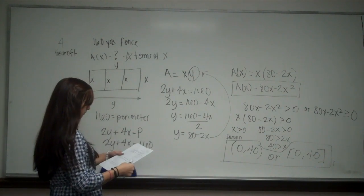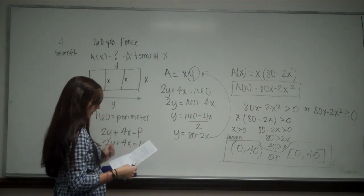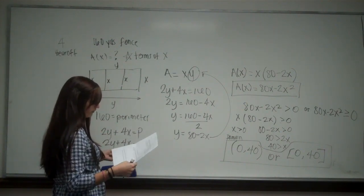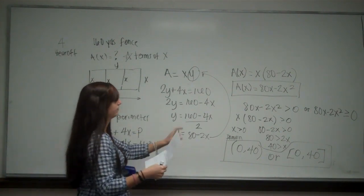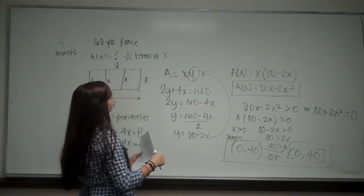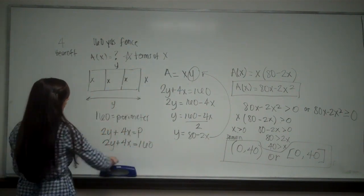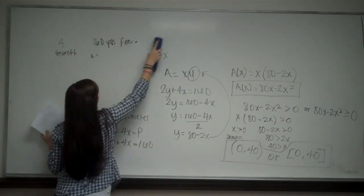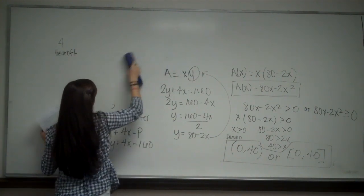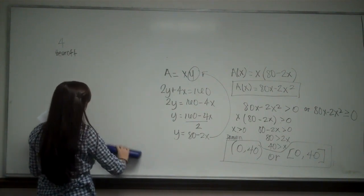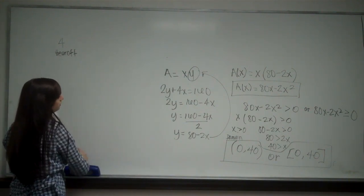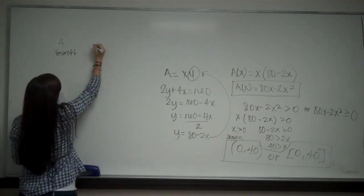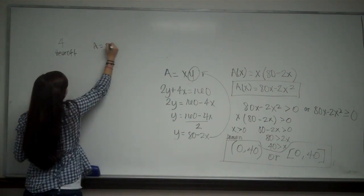Then for part b it says use your function to find the dimensions that will enclose an area of 800 yards. So we're going to, we have now an area of 800 yards. And I'm going to erase some of this so we have room. So use your function to find the dimensions that will enclose an area of 800 yards. Now area equals 800.